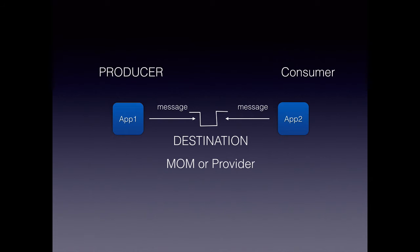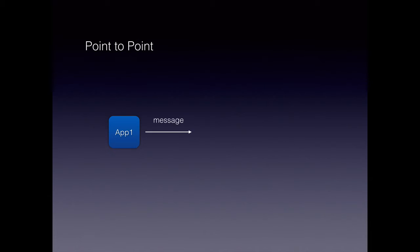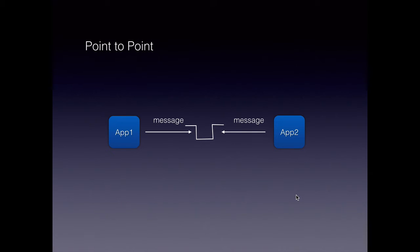There are two different modes or ways in which messages can be produced and consumed. The first is point-to-point, or P2P, wherein app 1 produces a message and writes it to the destination, and app 2 consumes that message. There is only one single app that reads the message off the queue. There can be multiple apps, but at a time only one app will read a message, and once that message is read, another app cannot read the same message.